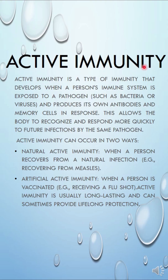Active immunity is a type of immunity that develops when a person's immune system is exposed to a pathogen, such as bacteria or viruses, and produces its own antibodies and memory cells in response. This allows the body to recognize and respond more quickly to future infections by the same pathogen. Active immunity can occur in two ways.